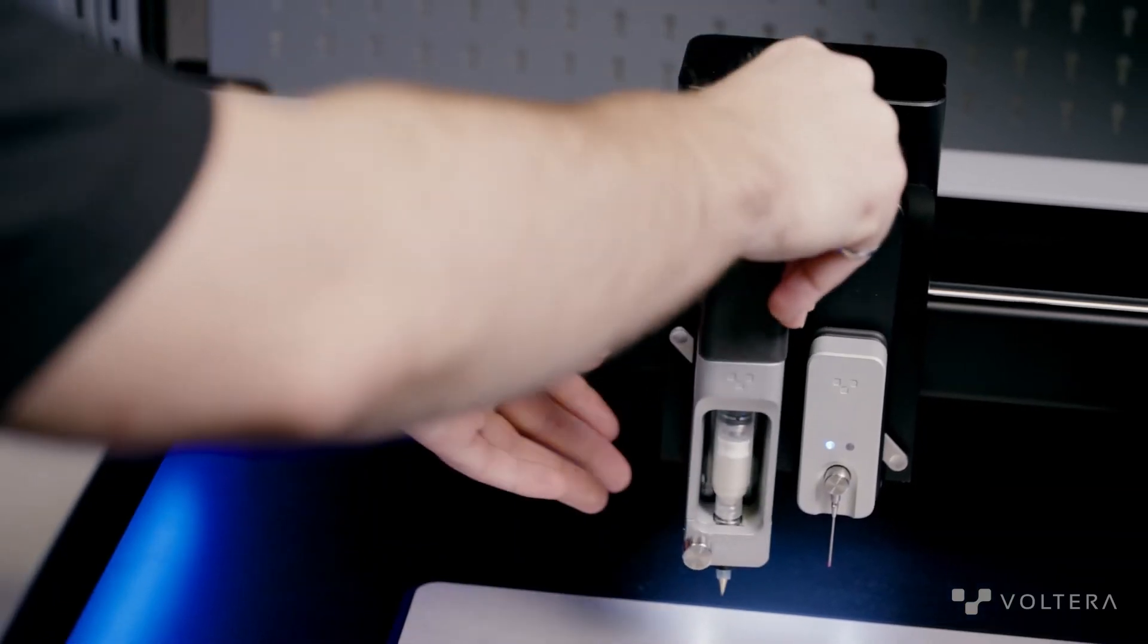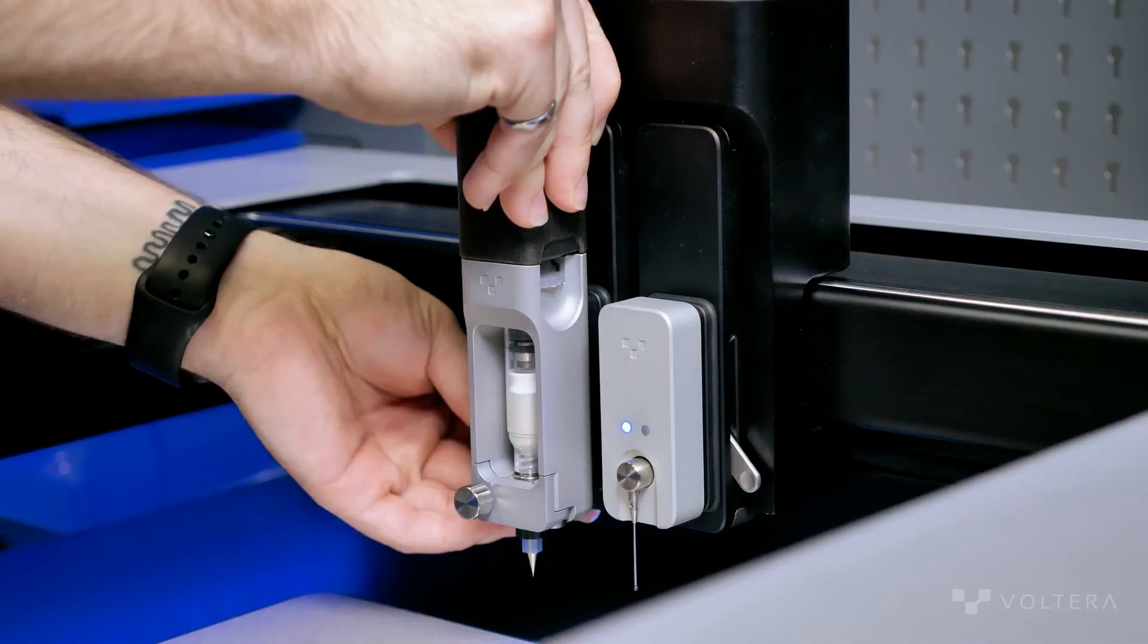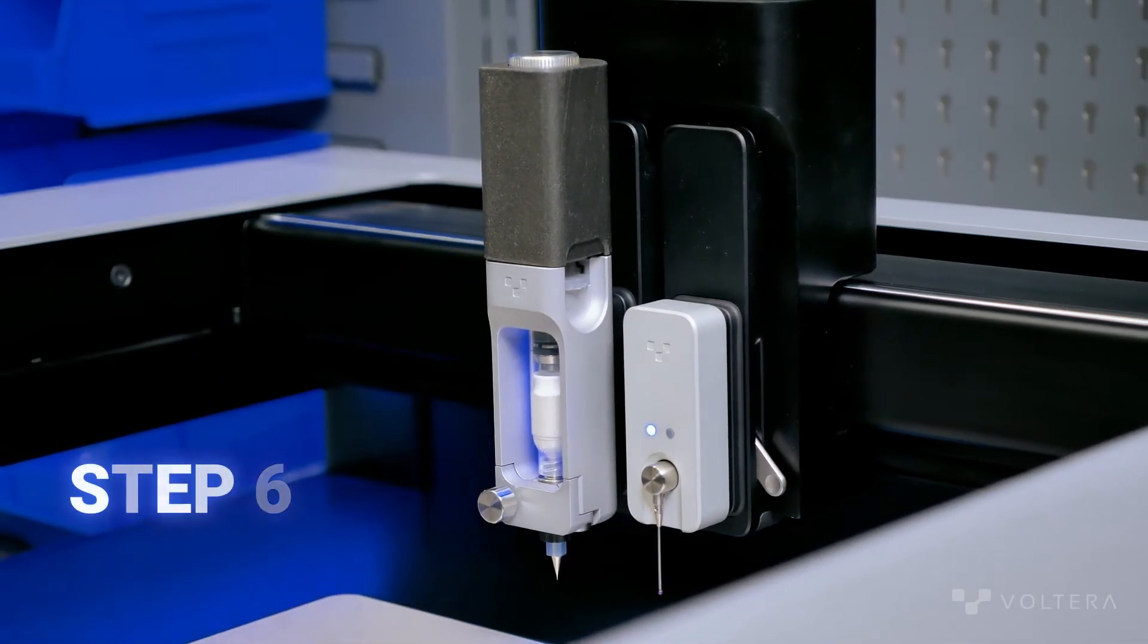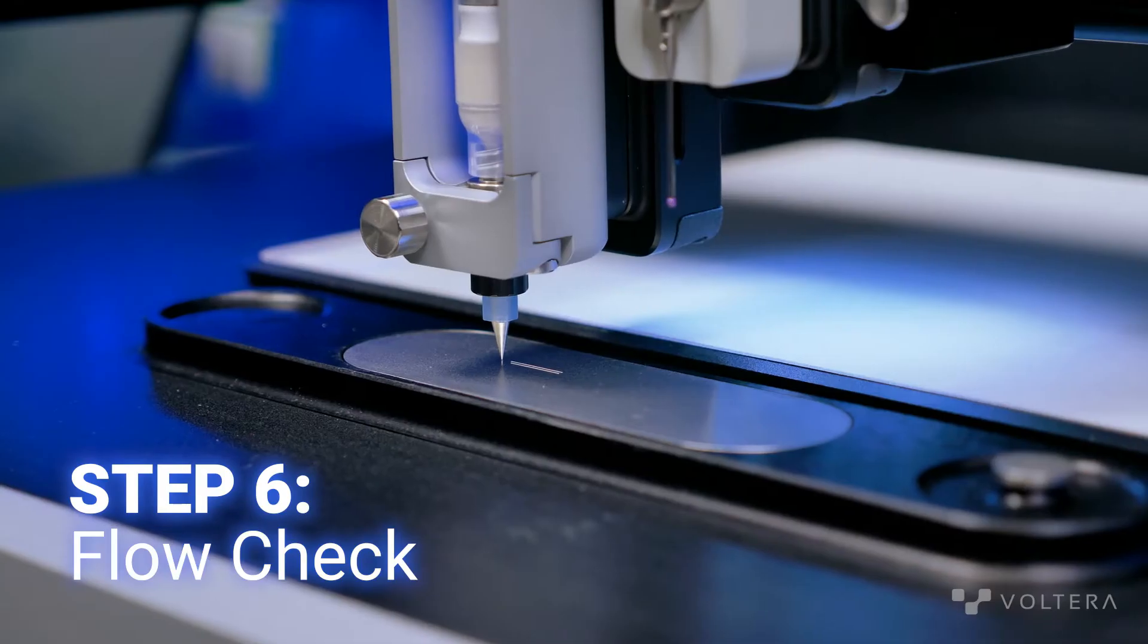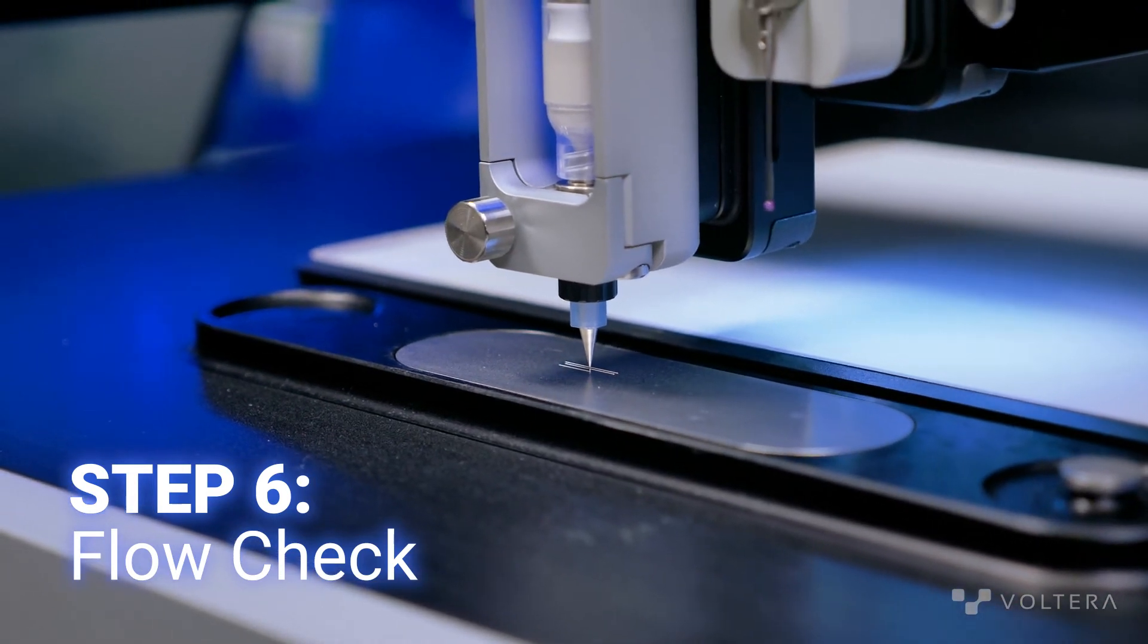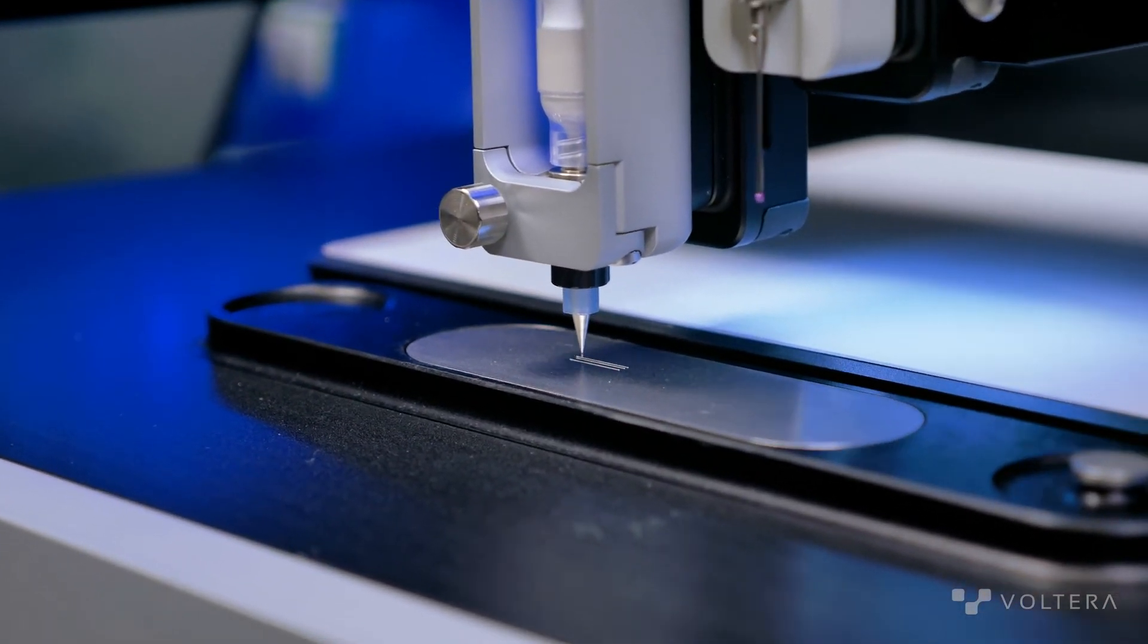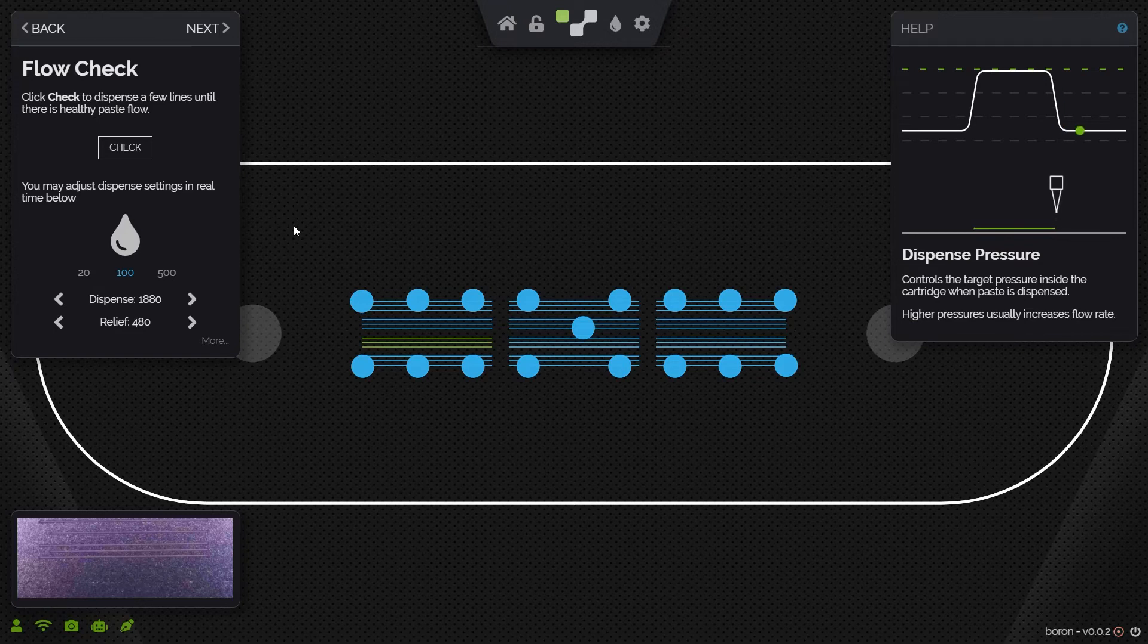Now that we've generated a height map of our substrate, we're going to move on to the last step before we print our pattern, the flow check. The flow check step lets us make sure that we have good flow before we start the print. This isn't a calibration step, we're just looking for three clean lines.